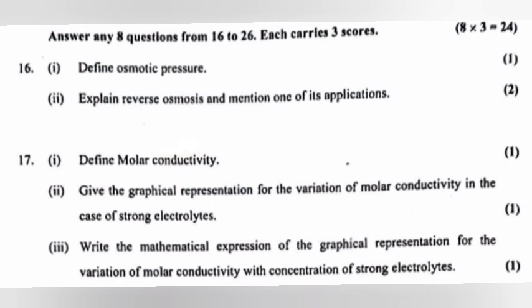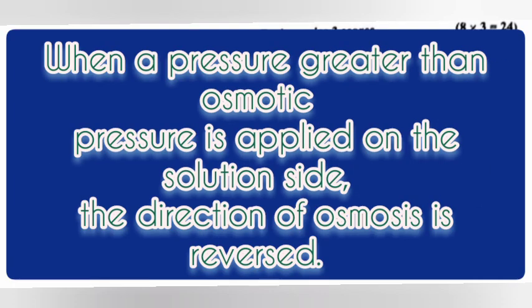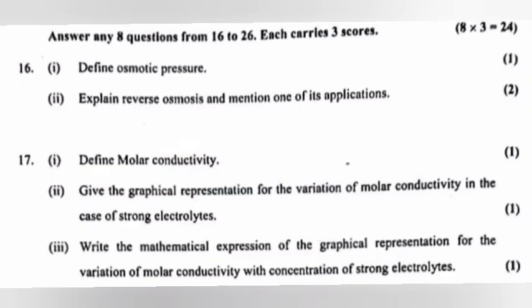Question 16 Part 1: Define osmotic pressure. Answer: The extra pressure that must be applied on the solution side to just stop osmosis. Part 2: Explain reverse osmosis and mention one application. Answer: When a pressure greater than osmotic pressure is applied on the solution side, the direction of osmosis is reversed. Application: desalination of sea water.